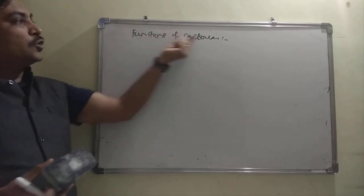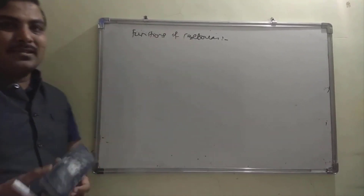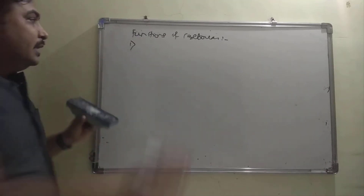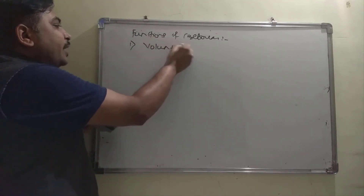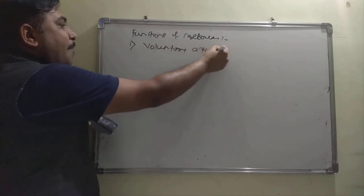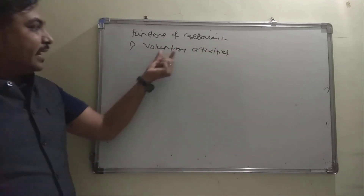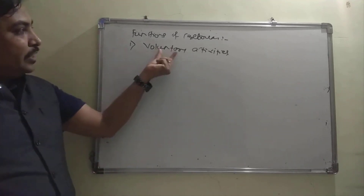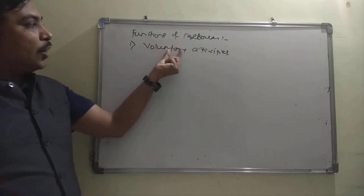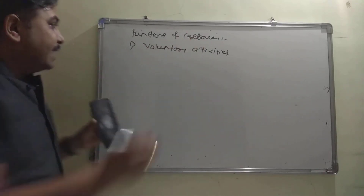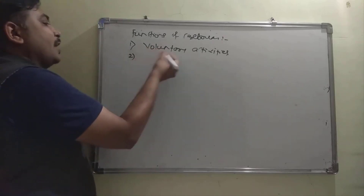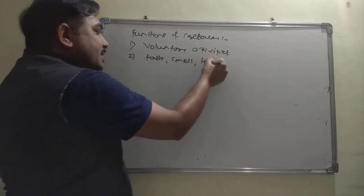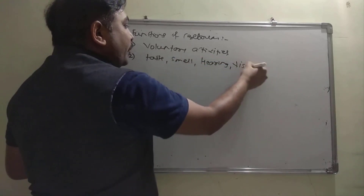Now the functions of the cerebrum. The cerebrum controls all the voluntary activities of the body — activities that are under the control of your will. It also controls the sense of taste, smell, hearing, and vision.